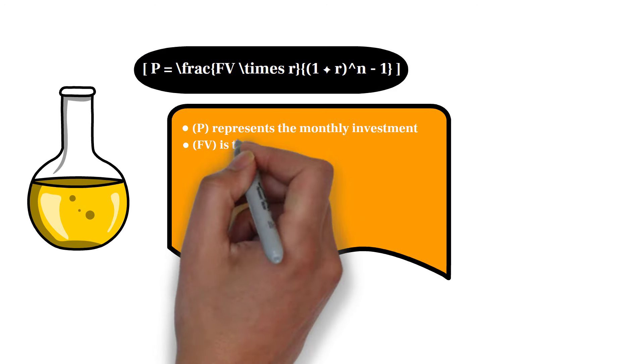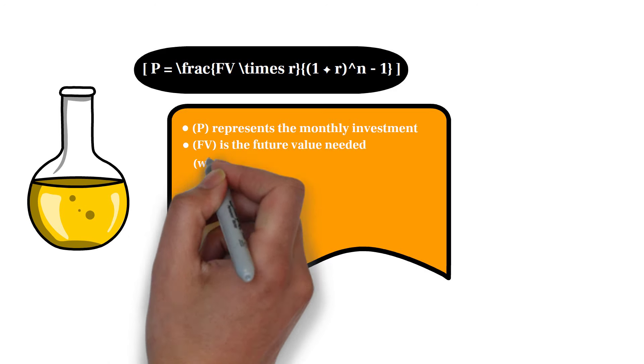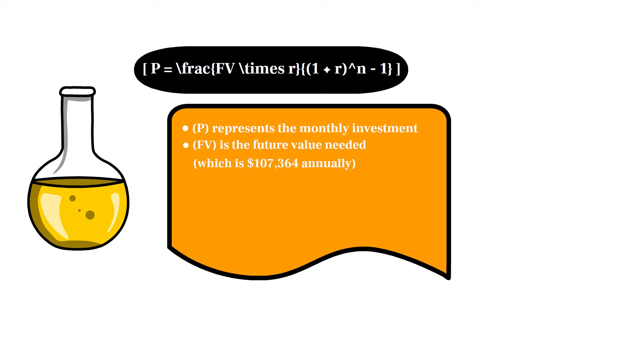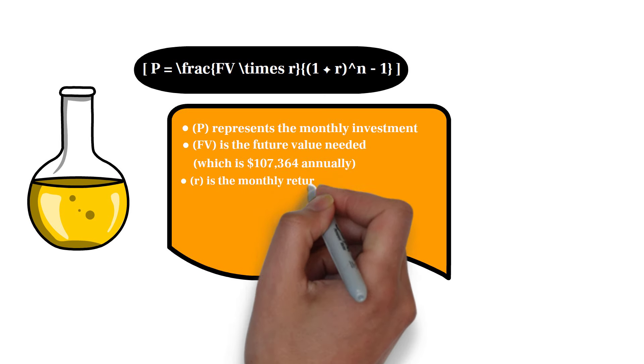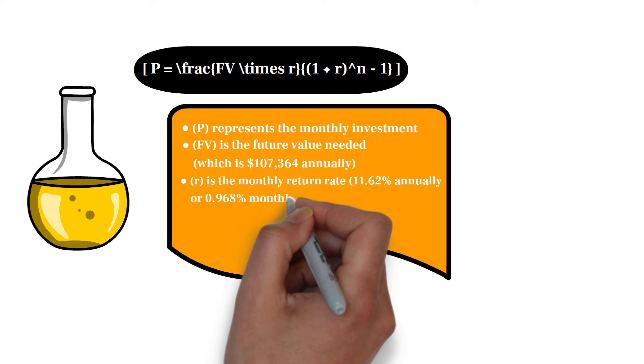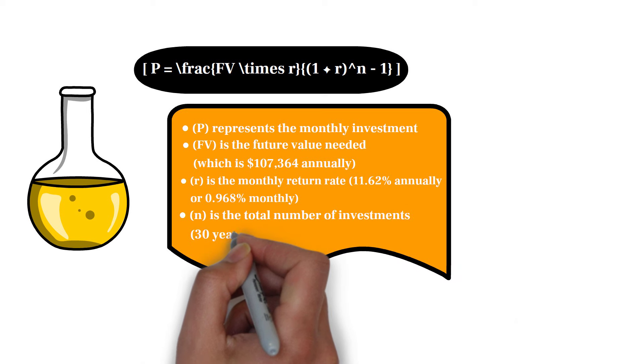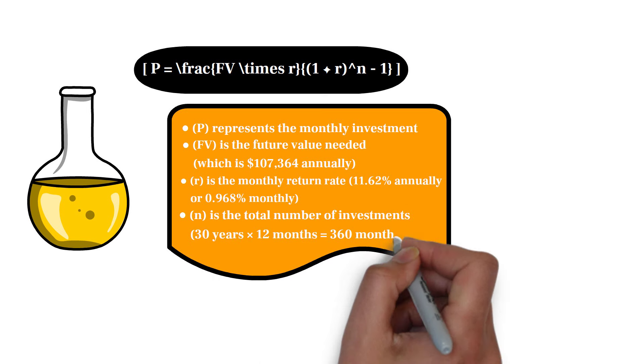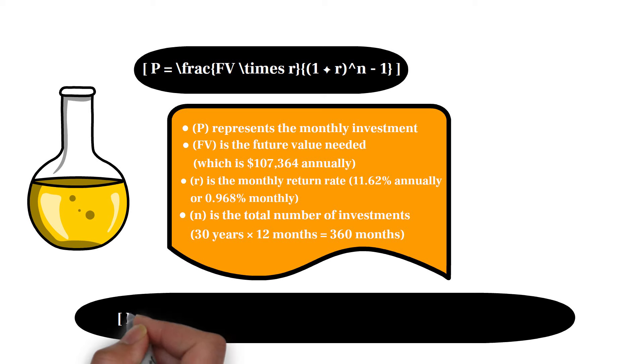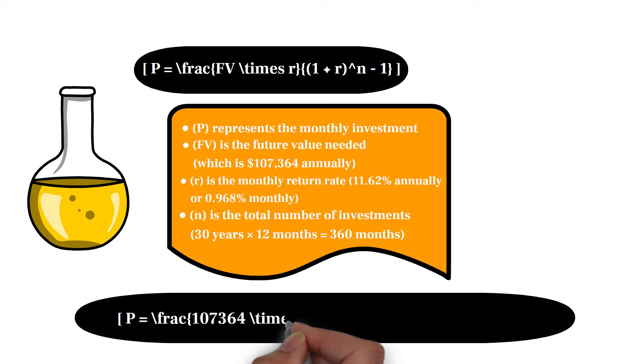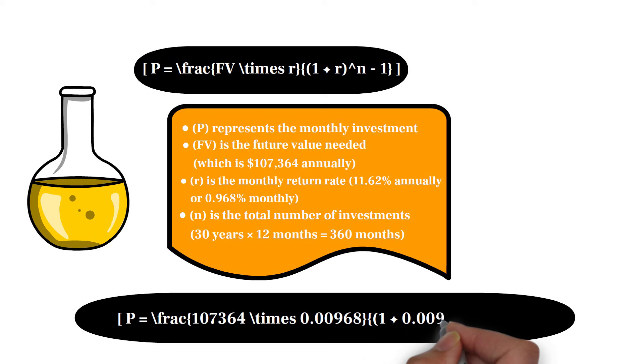Where p represents the monthly investment, fv is the future value needed, which is $107,364 annually, r is the monthly return rate (11.62% annually or 0.968% monthly), and n is the total number of investments (30 years times 12 months equals 360 months). Let's plug in the values: p equals (107,364 times 0.00968) divided by ((1 plus 0.00968) to the power of 360 minus 1).